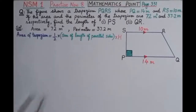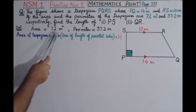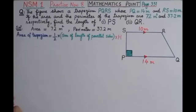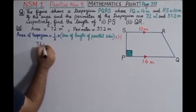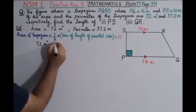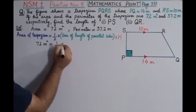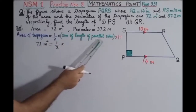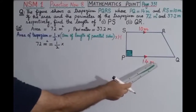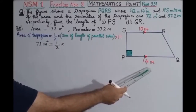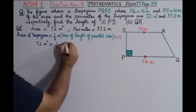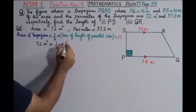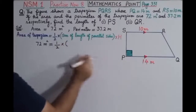Now we write down the values. The area of the trapezium is 72 square meters, so we write 72 square meters equals one-half multiplied by the sum of the lengths of the parallel sides. One side is PQ, which has length 14 meters, and the other side is RS, which is 10 meters.